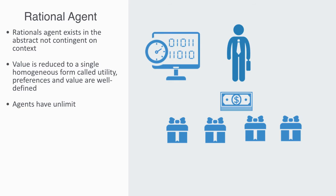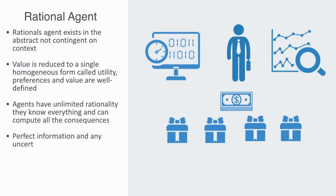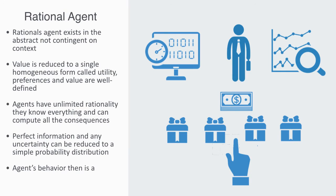preferences and value are well defined. The agents have unlimited rationality. The idea of omnipotence. That is to say, they can know everything and can compute the consequences of everything. Within this model, agents have perfect information, and any uncertainty can be reduced to a simple probability distribution. The agent's behavior then, will be a simple optimization algorithm over their set of possibilities. And it's thought that behavior can be altered by changing the input variables to this optimization algorithm,